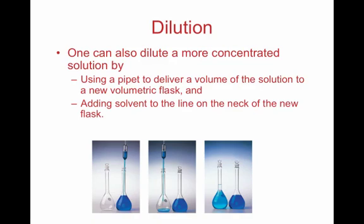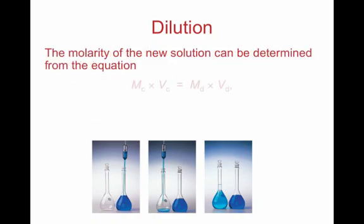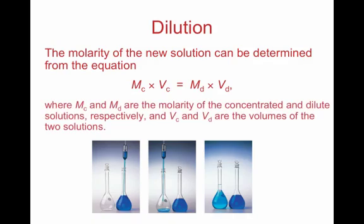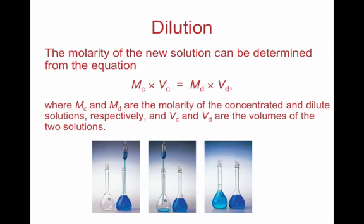When working with a dilution problem, we use M1V1 equals M2V2 to determine a certain molarity, where M is the concentration in molarity and V is the volume in liters. Where subscript 1 is the concentrated solution and subscript 2 is the dilute solution. We can rearrange this formula to solve for the concentration of the new solution, or if we're looking for a certain concentration, we can solve for the amount of the original concentrated solution that we would use.